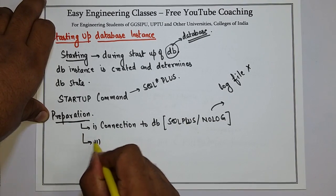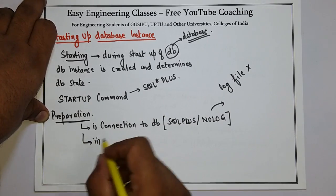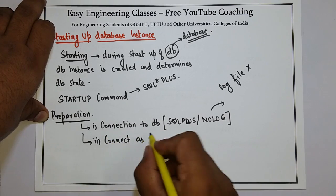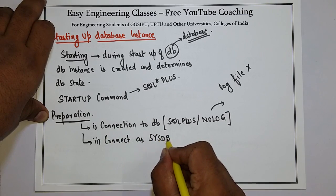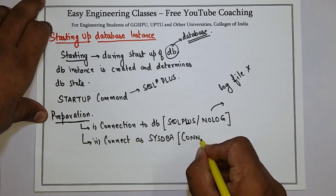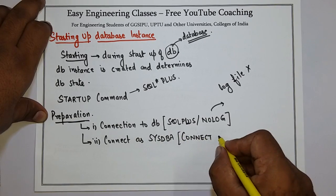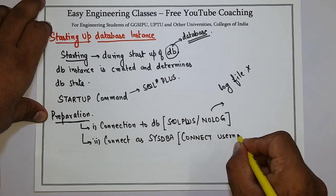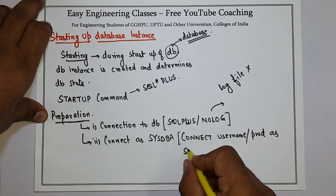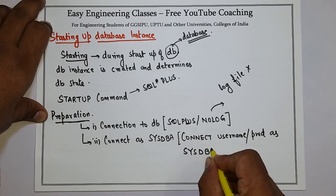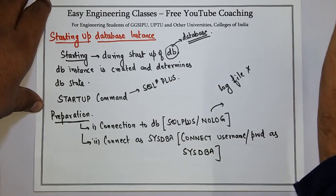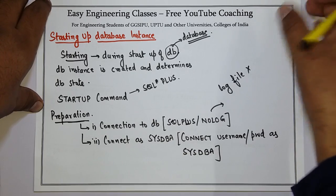The second preparation step is, after connecting to the database, connect as SYSDBA. The command to connect as SYSDBA should be used, and whichever user you select to connect as SYSDBA should have privileges equivalent to SYSDBA.